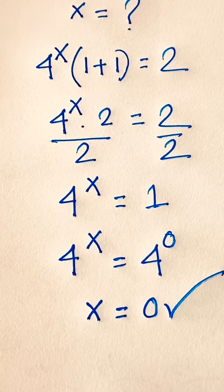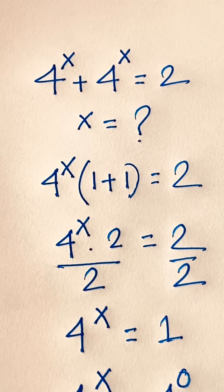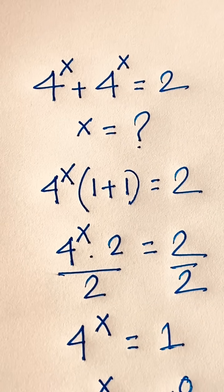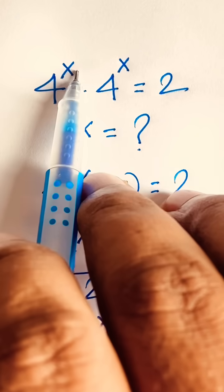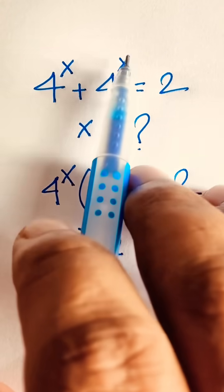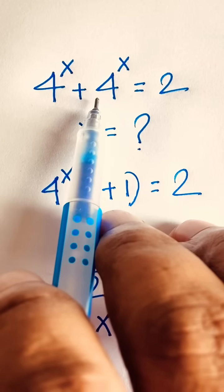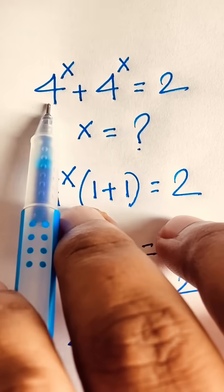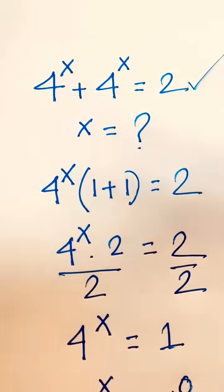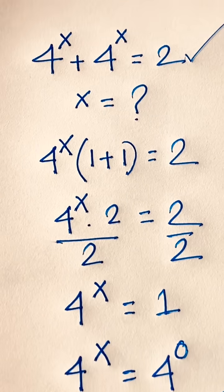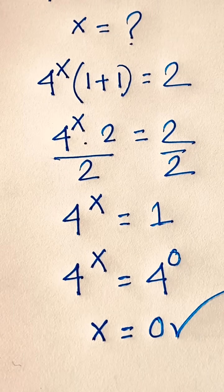Our final answer is x equals 0. To check: 4 to the power 0 is 1, and 4 to the power 0 is 1, according to exponential law. So 1 plus 1 equals 2, confirming our answer. x is equal to 0.